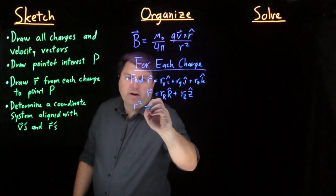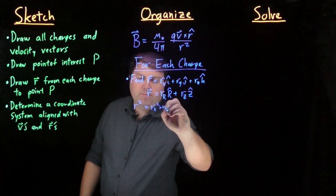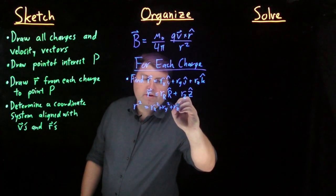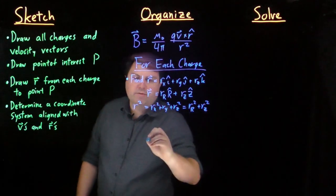And then we have find r squared is going to be r_x squared plus r_y squared plus r_z squared, or r in the radial direction squared plus r_z direction squared.